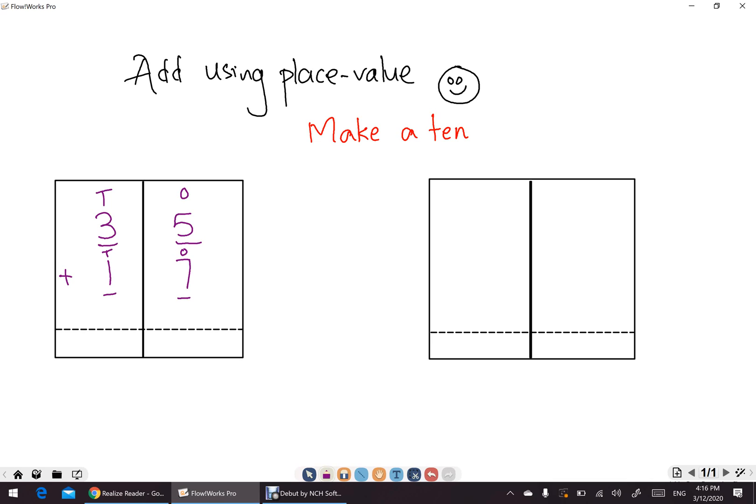So we will draw 10's and 1's. So in number 35, we have 3 10's and we have 5 1's. 1, 2, 3, 4, 5. In number 17, we have 1 10 and 7 1's. 1, 2, 3, 4, 5, 6, 7.